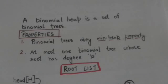First, each binomial tree of a binomial heap must obey the min heap property. Min heap property is that the key of a node must be greater than or equal to the key of its parent.